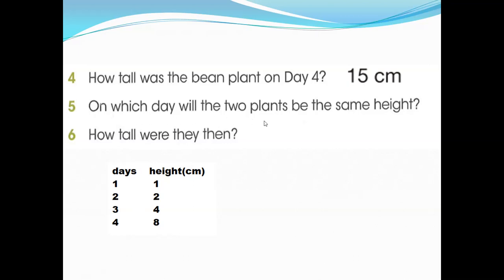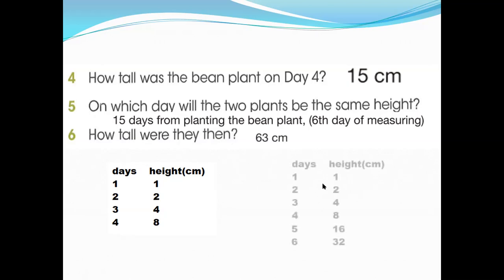On which day will the two plants be the same height? On the 15th day. 10 days finish. It's starting from 10th, 11, 12, 13, 14, 15, 6 days. 15 days from planting the bean plant. He started measuring after 10 days, starting from 10th day 10, 11, 12, 13, 14, 15. 15 days from planting the bean plant. So they have both same height on that day. How tall were they then? On the 15 days there was 63 centimeter. How? I told you before until 4 days the bean plant was 15 centimeter. After 15, 15 plus 16 and then 32, if you plus it you can get the answer 63.